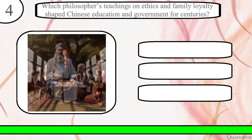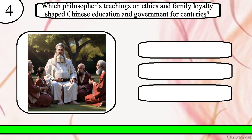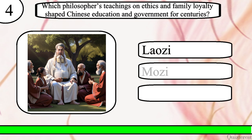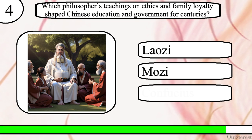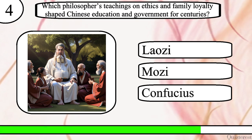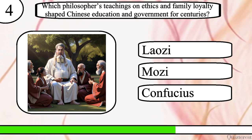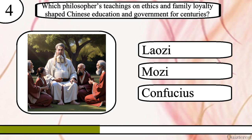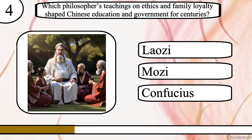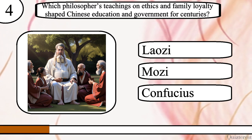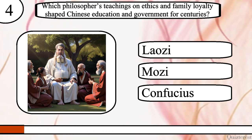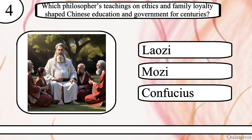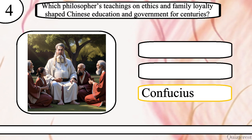Question 4. Which philosopher's teachings on ethics and family loyalty shaped Chinese education and government for centuries? Laozi, Mozi, or Confucius? The correct answer is Confucius.